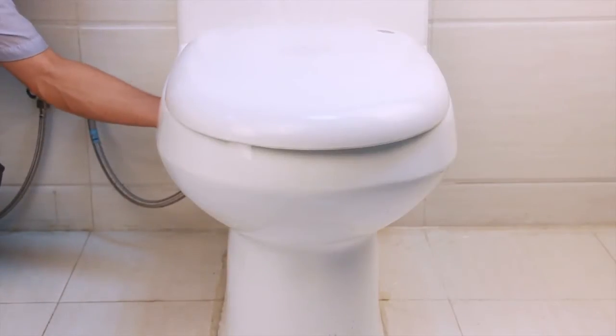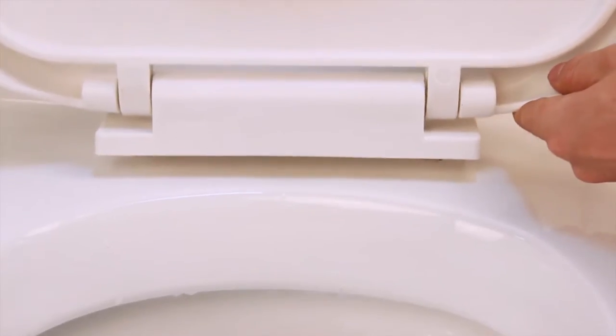Unscrew the screws on the toilet seat until there is about a ¾ of an inch gap between the lid and toilet base.